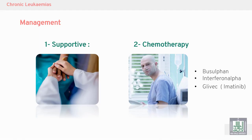Management of chronic leukemia is supportive and chemotherapy. We give supportive treatment to treat anemia and to manage thrombocytopenia, and chemotherapy to eradicate and kill malignant cells.